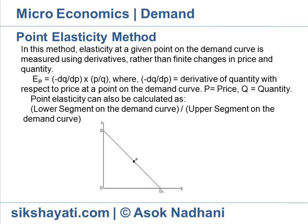Elasticity of demand is different at different points on the demand curve. Point elasticity can also be calculated as the lower segment on the demand curve divided by the upper segment on the demand curve. So, the elasticity of demand at point P on the demand curve DD1 is PD1 by PD.